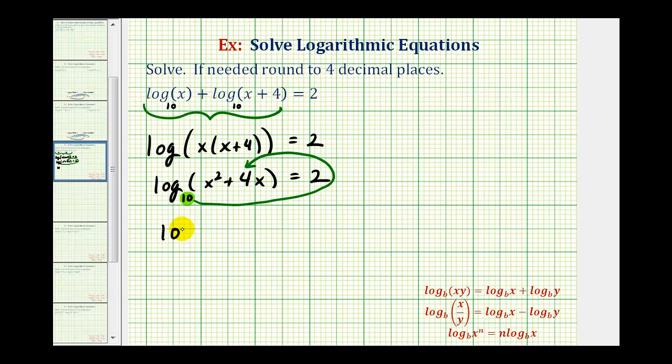So again, 10 to the second must equal the quantity x squared plus four x. 10 squared is equal to 100. Notice how we have to solve a quadratic equation. So let's go ahead and set this equal to zero. So we'll subtract 100 on both sides, which will give us zero equals x squared plus four x minus 100.